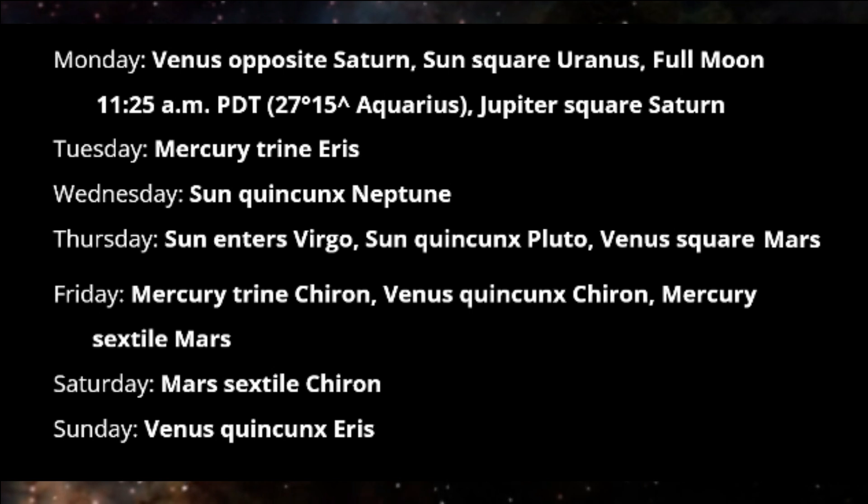On Wednesday, the Sun is Quincunx Neptune. Situations may be confusing, or we could feel disillusioned or unclear about next steps.